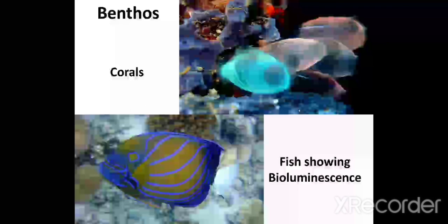Benthos are the organisms which live on the bottom of water, for example sea anemones, seaweeds, sea snails, corals, and fish showing bioluminescence. With this video, we covered basics of environment and ecosystem. Thank you for watching the video.